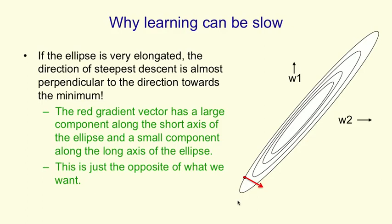If you look at the red arrow in the picture, the gradient is big in the direction in which we don't want to move very far, and it's small in the direction in which we want to move a long way.